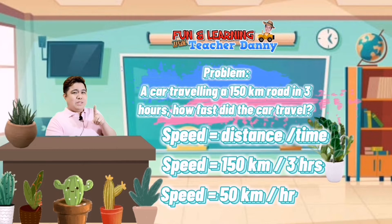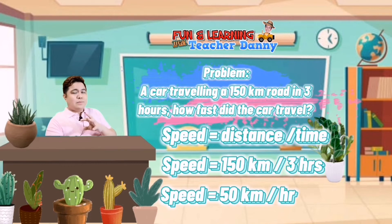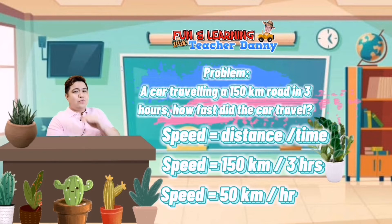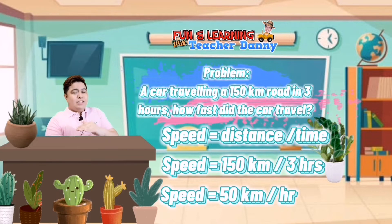Remember, speed is equal to distance divided by time. Going back to the problem, the given are the distance and the time. To get the speed, we divide the distance which is 150 kilometers by the time which is 3 hours. That is 150 divided by 3, which equals 50. We copy the unit for distance — kilometers — then use the slash, which we call 'per,' then the unit of time which is hour. So our speed is 50 kilometers per hour.